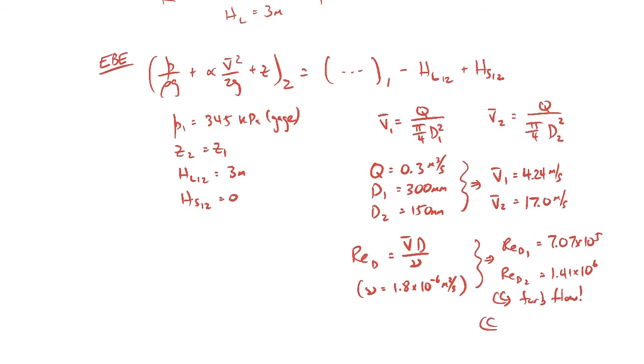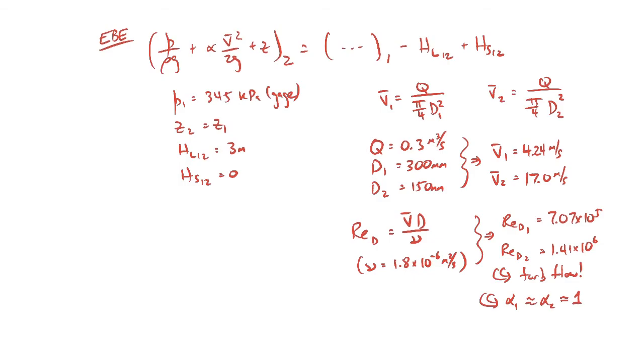Which means that the kinetic energy correction factor at 1 and the kinetic energy correction factor at 2 are both about equal to 1. We now have all the information we need. We can go ahead and rearrange this extended Bernoulli equation to solve for the pressure 2.